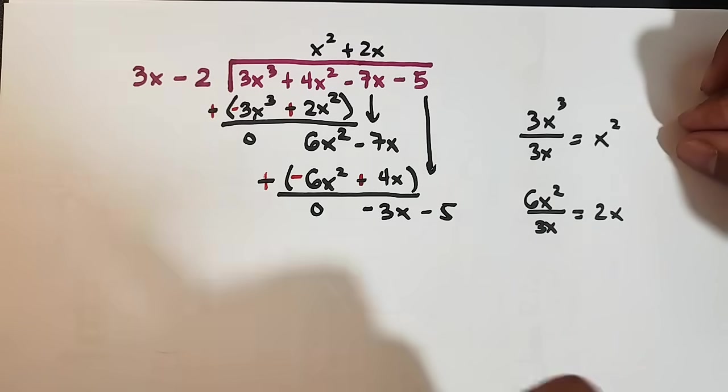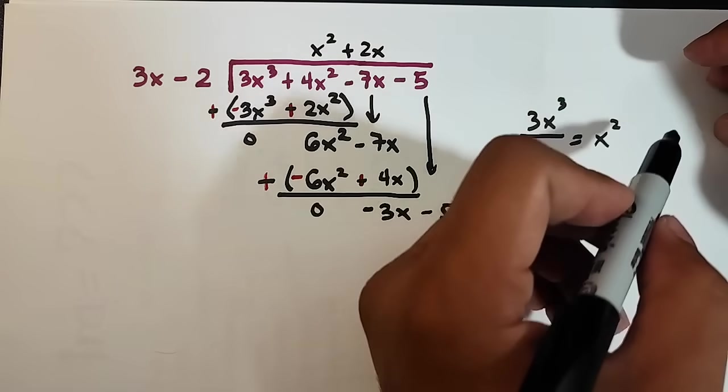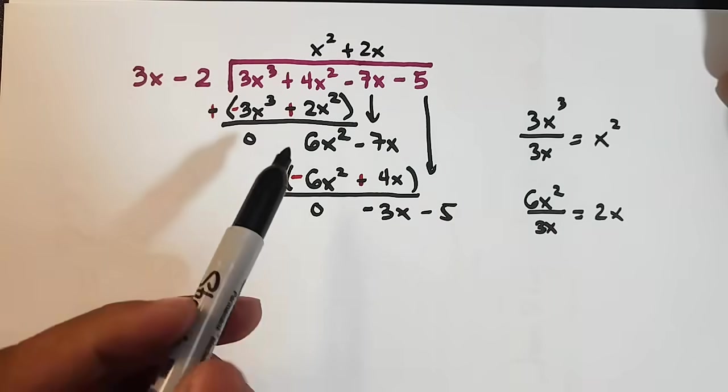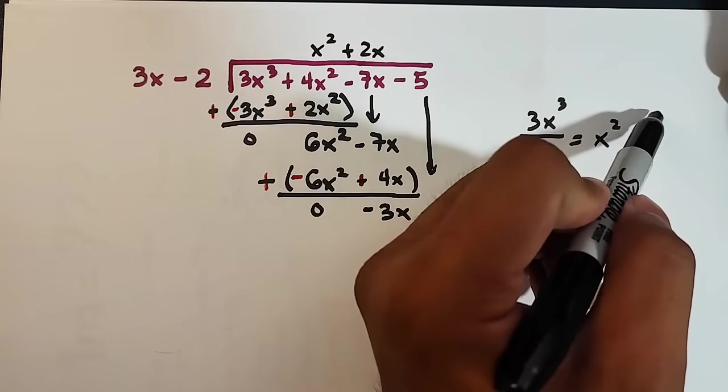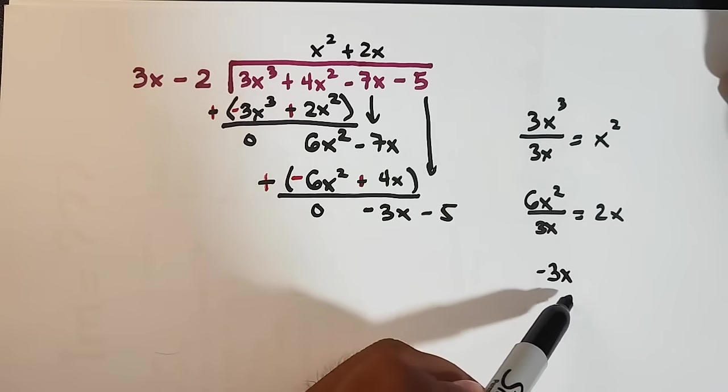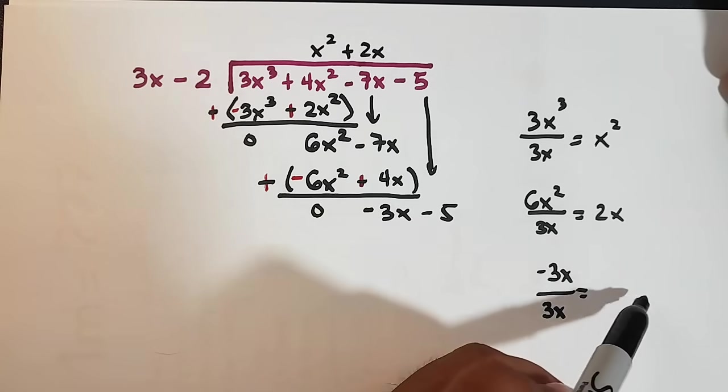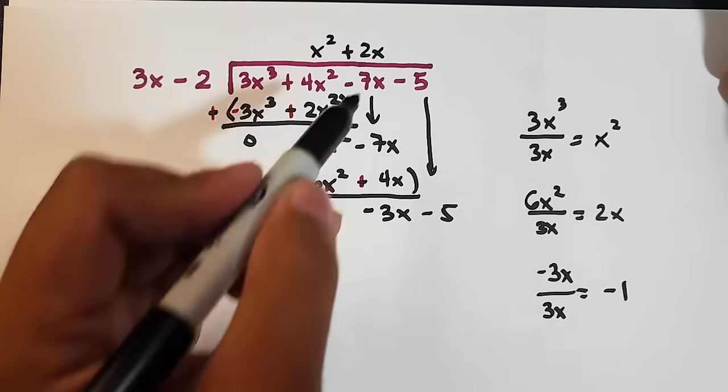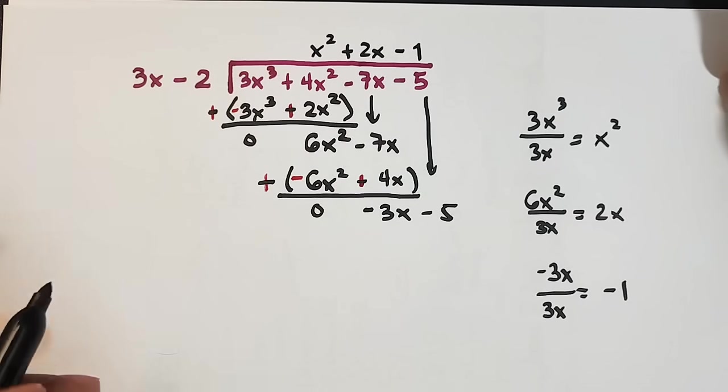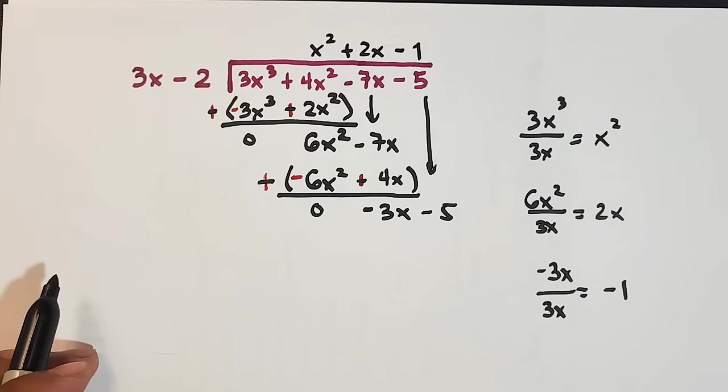Divide again our leading coefficient. We have in this part. We have negative 3x over 3x. That is definitely negative 1. So we place here minus 1.